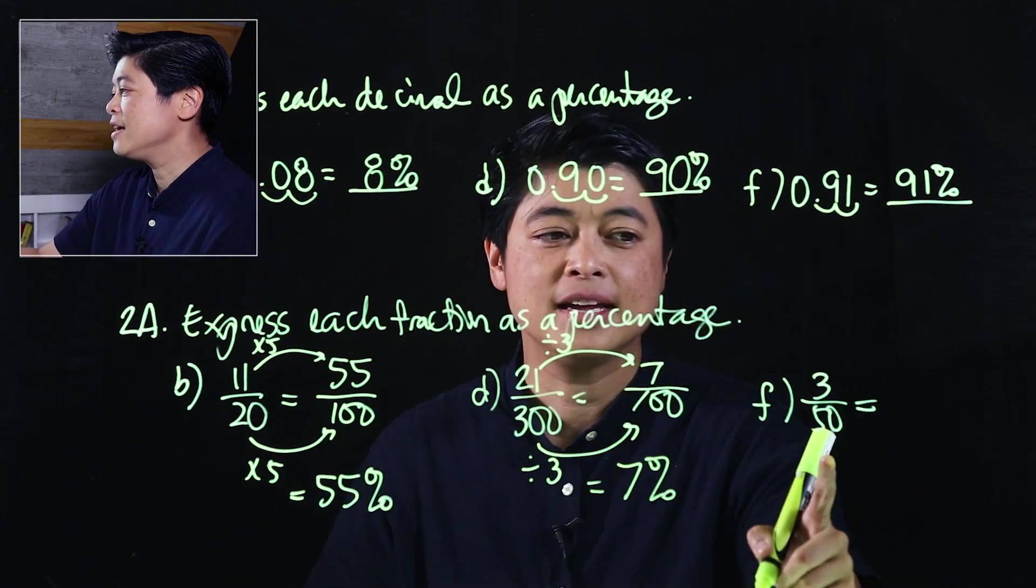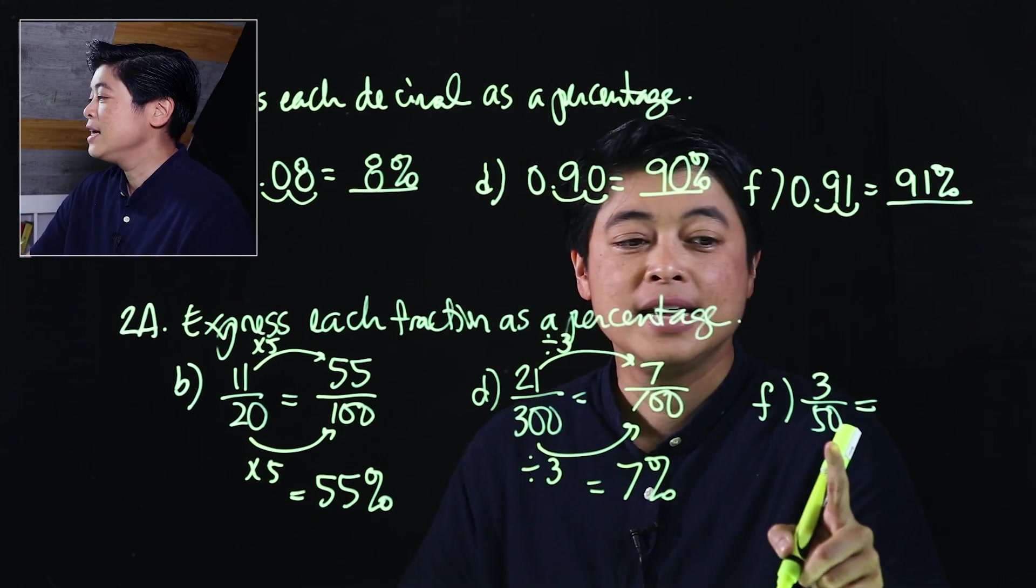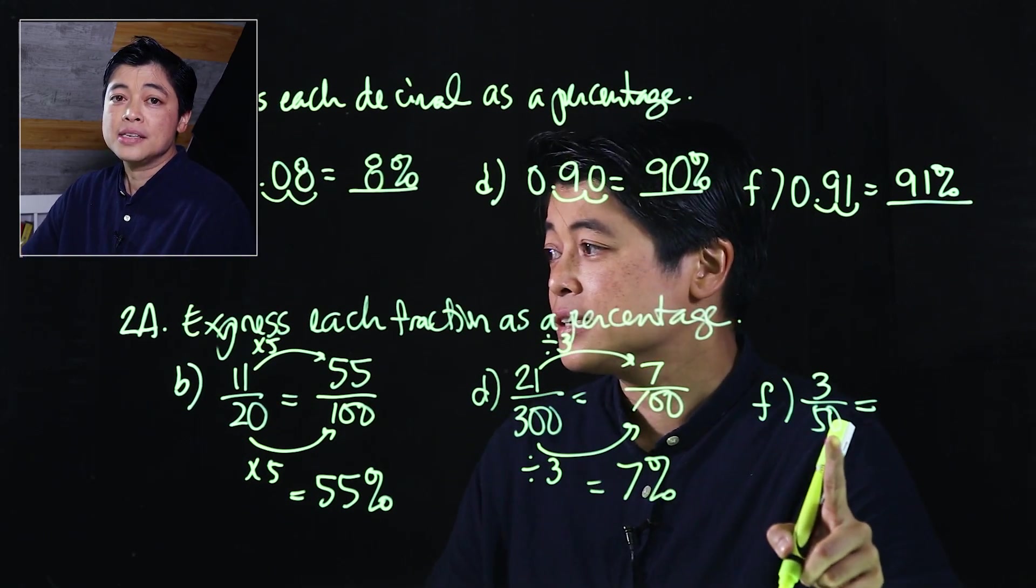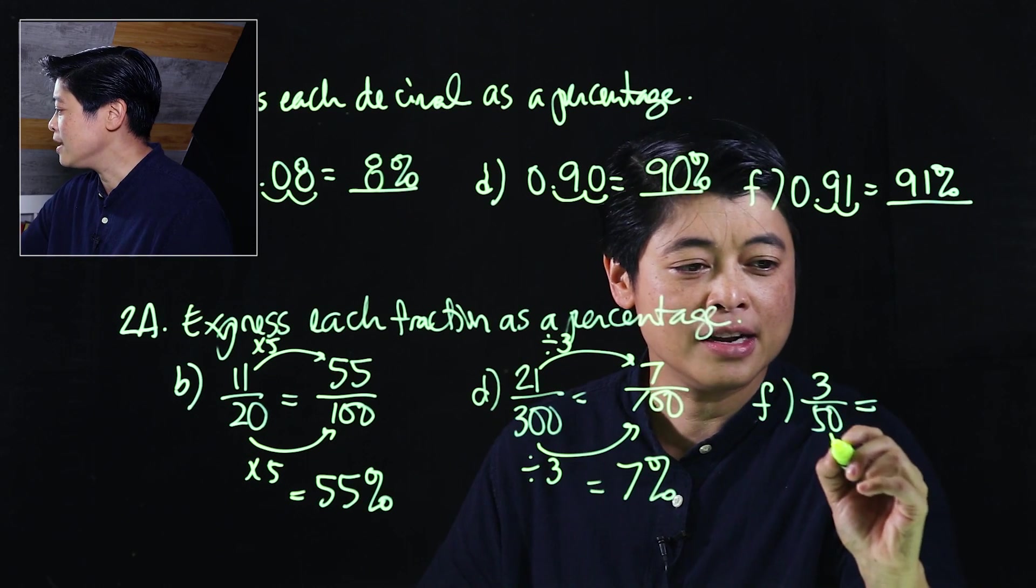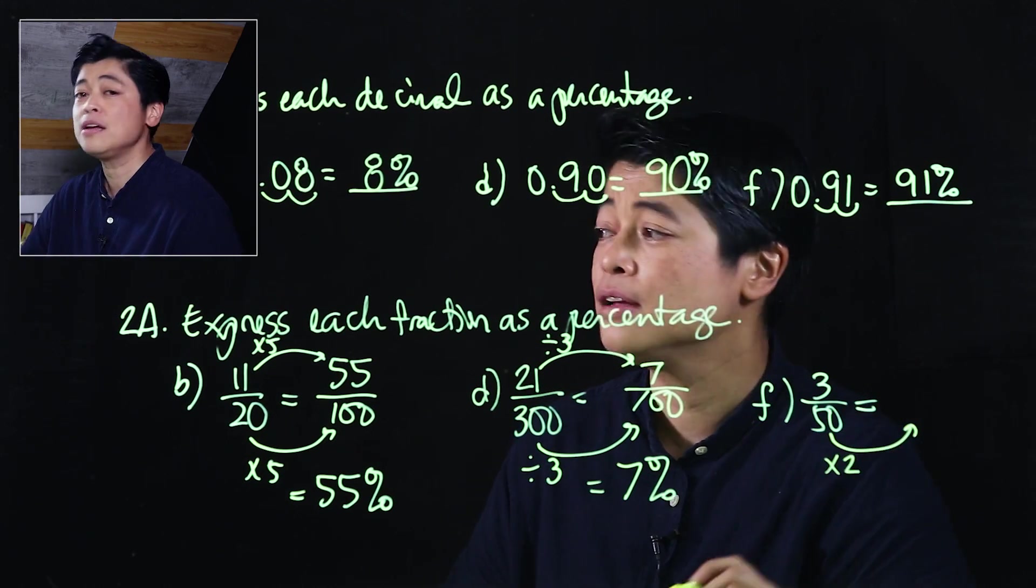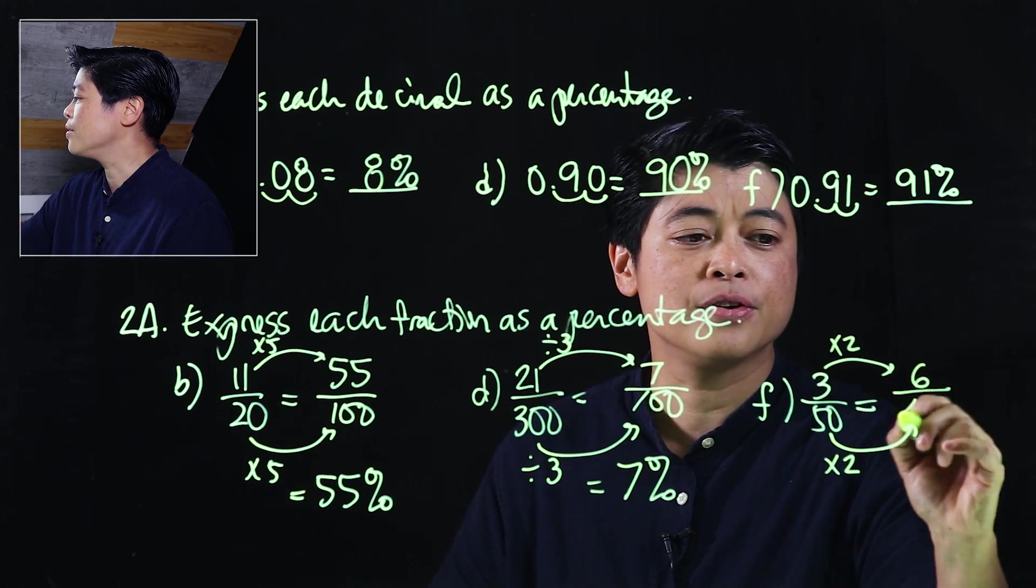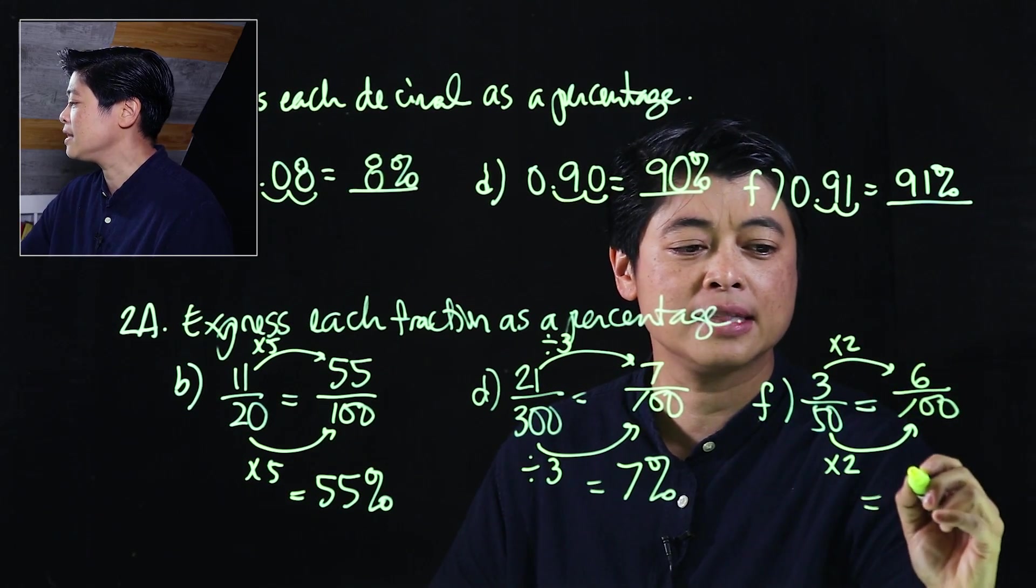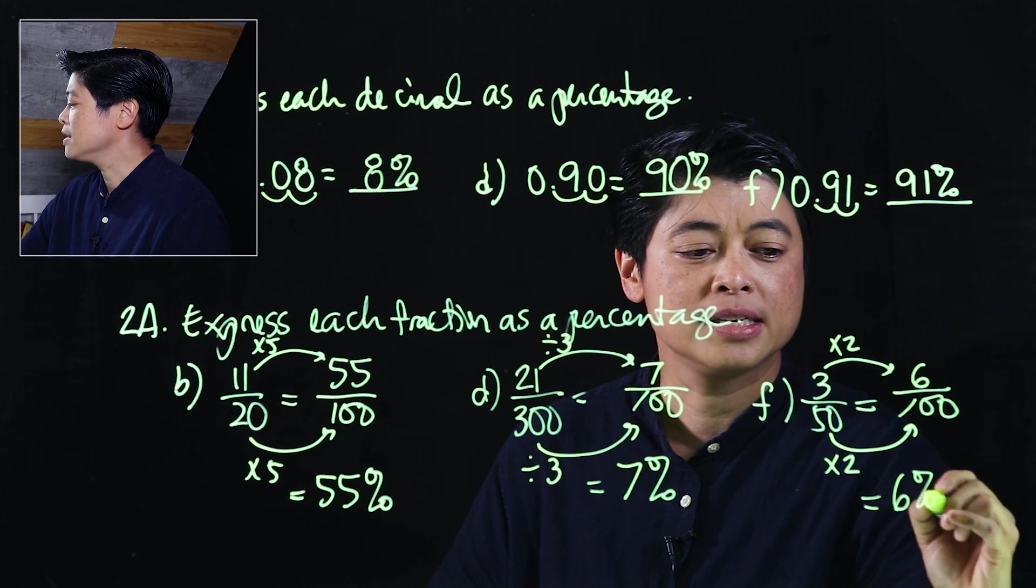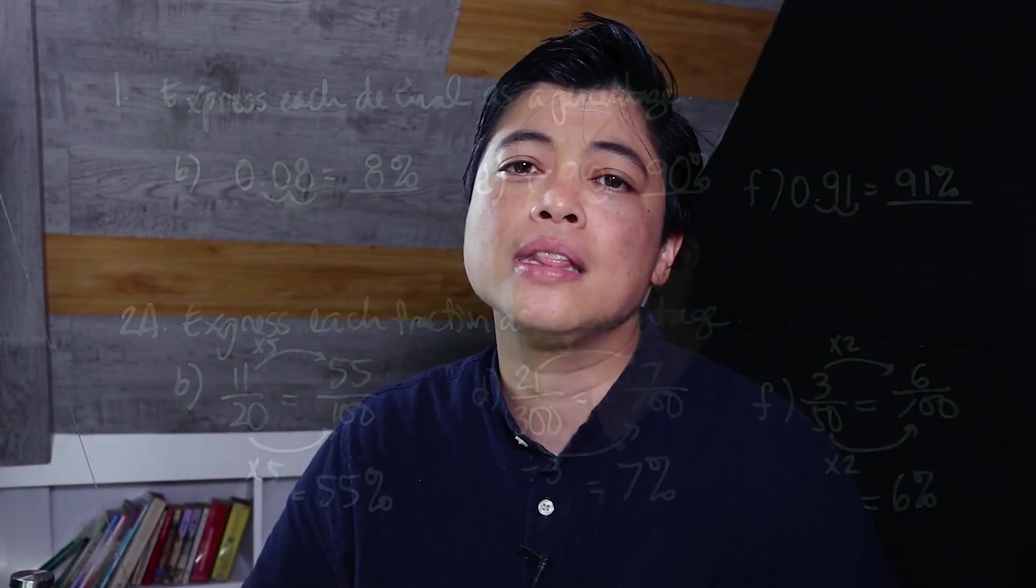Finally if we look at letter f, this is over 50, which means to make it 100 I just times it by 2. So I times that by 2 as well, so I get 6 over 100, making it 6 percent. The numbers given here clearly are easily converted to 100.